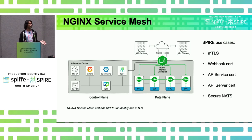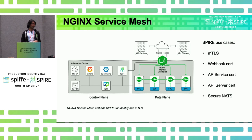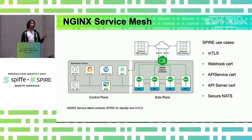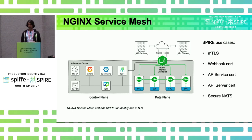All of this comes from our Nginx service mesh, which is what we're working on at F5. We embed Spire and deploy it as part of the service mesh — the Spire server and agent — and use Spire to manage all aspects of identity: mTLS, webhook certificates, API service certificates, and secure control plane communication through NATS using certificates provided by Spire. We built our service mesh using Spire as a first-class citizen for all identity and security.